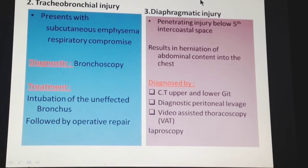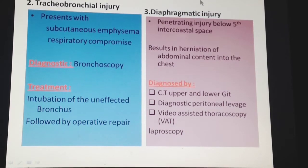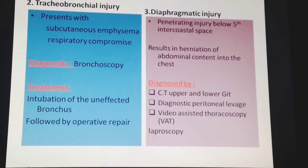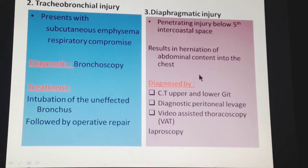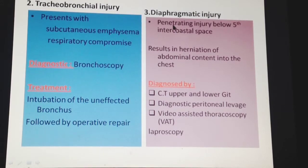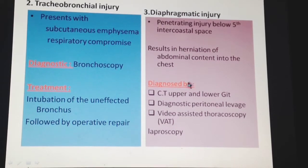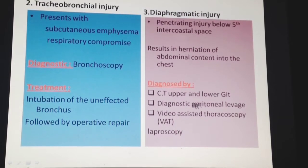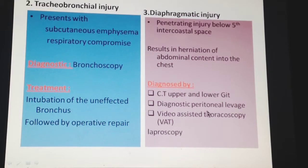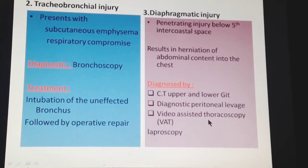Diaphragmatic injury is caused by penetrating injury below the fifth intercostal space, where the diaphragm is located. This results in herniation of abdominal contents into the thoracic cavity. Diagnosis is made by CT scan of the upper and lower GI tract, diagnostic peritoneal lavage, or video-assisted thoracoscopy (VATS) or laparoscopy.